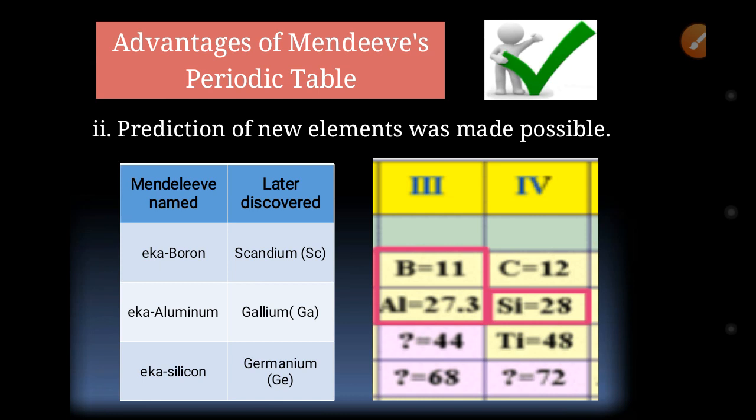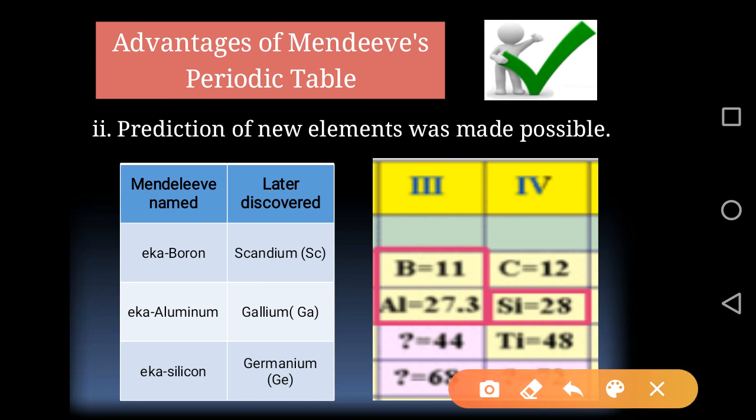The second advantage was that prediction of new elements was made possible. Mendeleev's periodic table helped predict elements that had not yet been discovered. The vacant spaces named Eka-Boron, Eka-Aluminium, and Eka-Silicon were predicted, and all properties predicted for them proved correct. The elements later discovered to fill these spaces were named scandium, gallium, and germanium.